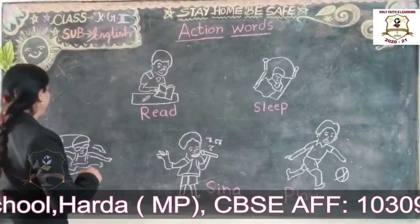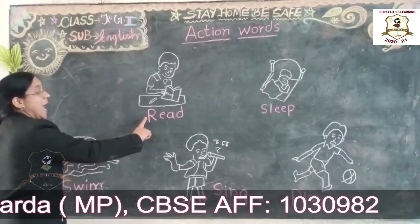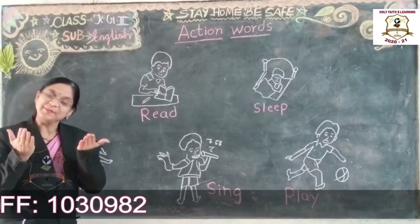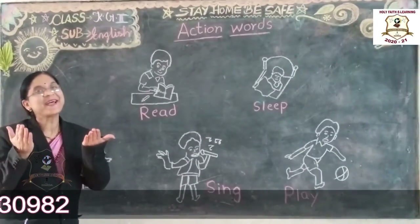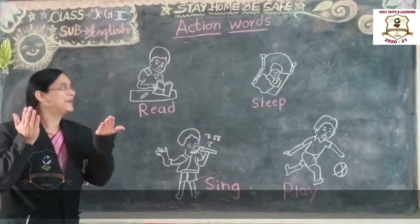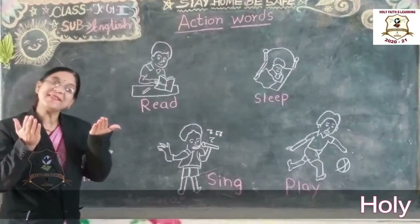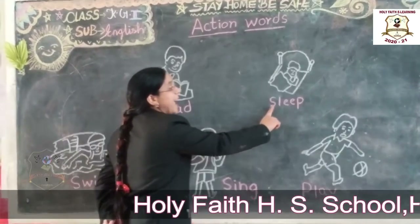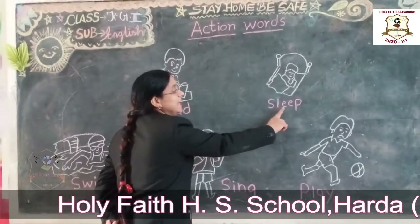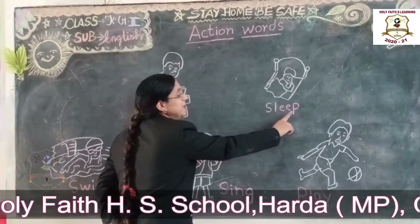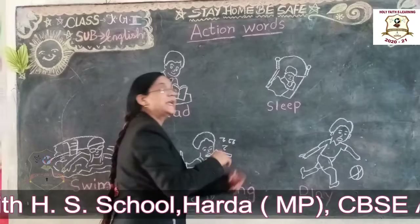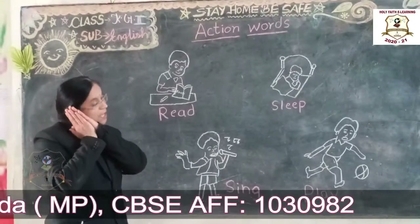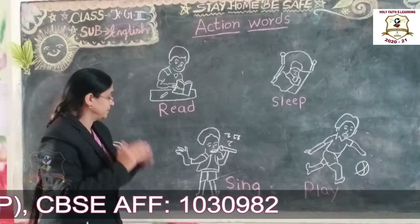Repeat with me. R, E, A, D — Read. Read means पढ़ना. Okay, now next. Sleep. S, L, E, E, P — Sleep. Sleep means sona.